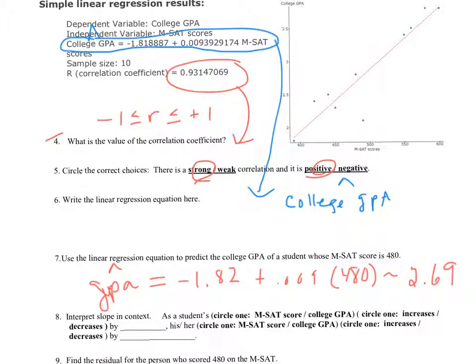Okay, so next we just want to interpret the slope, and when we interpret the slope, we're interpreting this number right here, roughly 0.009. Okay, so slope measures the change in Y by a one-unit change in X. So in context, it says that as math SAT scores increase by one point, we expect the college GPA to increase because the slope is positive by 0.009.